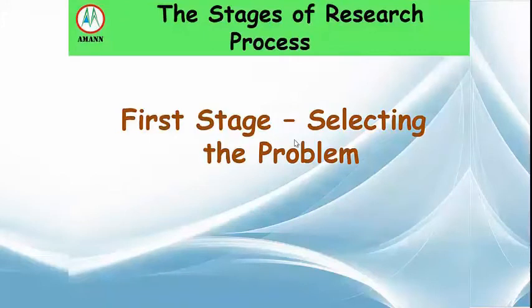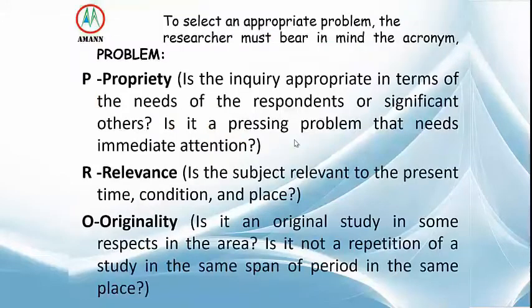The stages of the research process begin with the first stage: selecting a problem. To select an appropriate problem, the researcher must bear in mind the acronym PROBLEM. P stands for Propriety — is the inquiry appropriate in terms of the needs of the respondents or significant others? Is it a pressing problem that needs immediate attention? R stands for Relevance — is the subject relevant to the present time, condition, and place? O stands for Originality — is it an original study in some respects in the area?